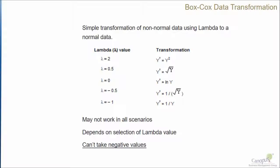When lambda is 0.5, it takes the square root of our variable, and so on. So it applies simple mathematical functions.